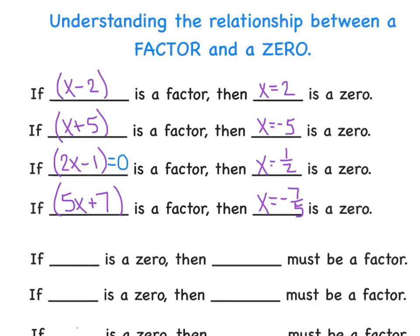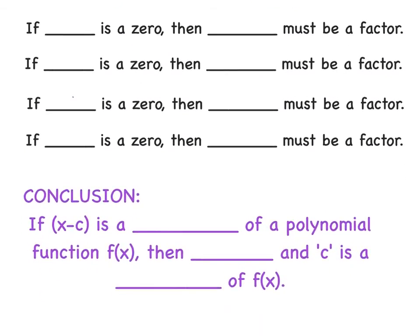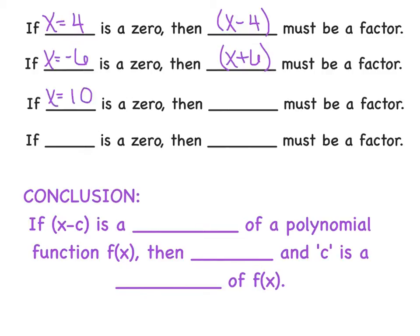Can we turn that relationship around and go the opposite direction? If x equals 4 is a zero, then (x minus 4) is the factor. If x equals negative 6 is a zero, then (x plus 6) is the factor. If x equals 10, then (x minus 10) is the factor. Here's a tricky one: if x equals 3/2, then (2x minus 3) is the factor — just picture setting 2x minus 3 equal to 0, adding 3 over, then dividing by 2.